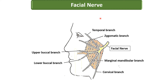Let us look at the facial nerve and how it passes through the parotid gland. The facial nerve enters the parotid gland through its posteromedial surface and divides into two branches: the temporofacial branch and the cervicofacial branch. The temporofacial branch further divides into two branches — temporal and zygomatic.